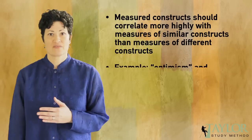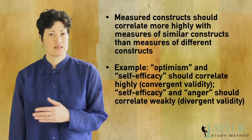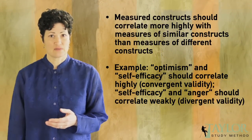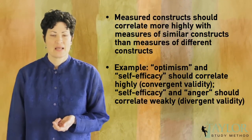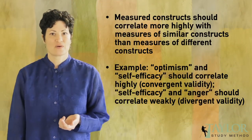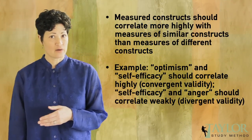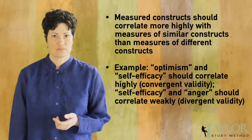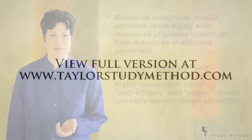For example, if we measure optimism and self-efficacy — constructs that are theoretically related to each other — we would expect a strong correlation. If we are measuring constructs that are dissimilar, for example self-efficacy and anger, we would expect to find a weak correlation, which is an example of divergent validity.